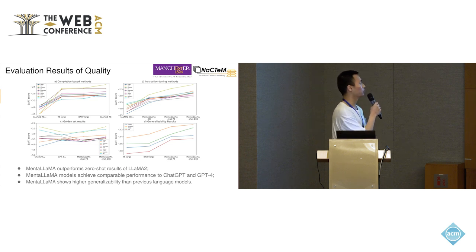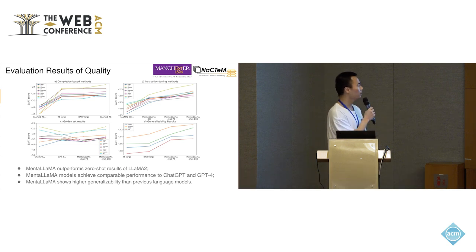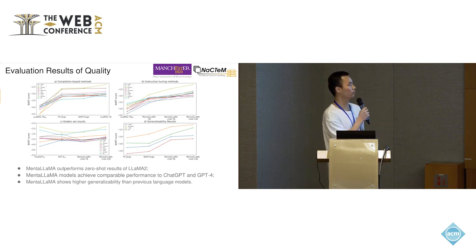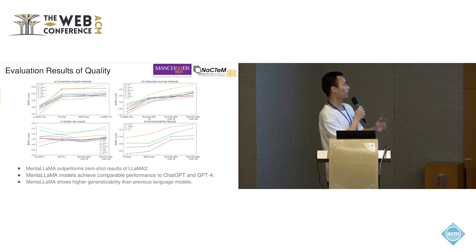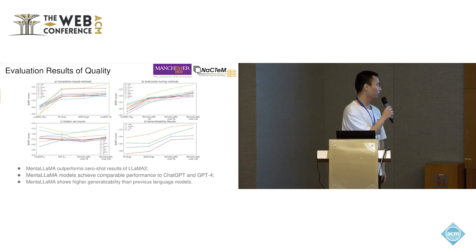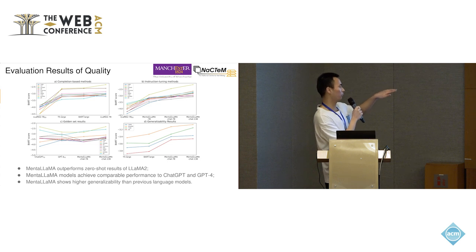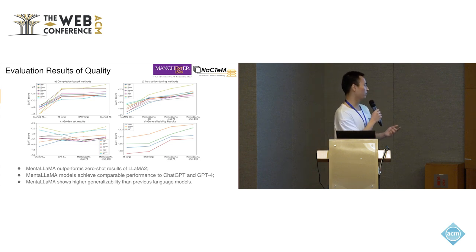We also evaluate the quality of the generated explanations. Looking at the instruction-tuned methods in sub-figure B, MentalLlama models significantly outperform the original LLaMA 2 models in generated explanation quality, showing the effectiveness of our instruction-tuning process with the IMHRI dataset. Comparing MentalLlama with state-of-the-art commercial language models such as ChatGPT and GPT-4 on the 350 expert-written golden set, shown in sub-figure C, MentalLlama achieves comparable performance even to the advanced ChatGPT and GPT-4 models, further proving the quality of MentalLlama's generated explanations.